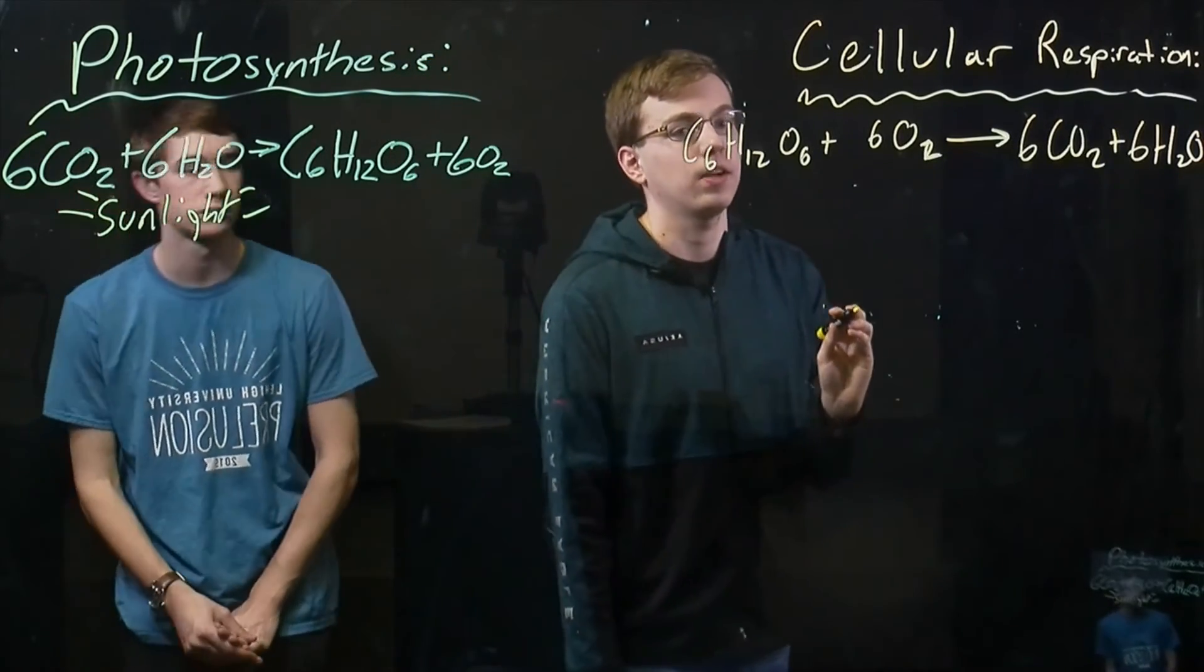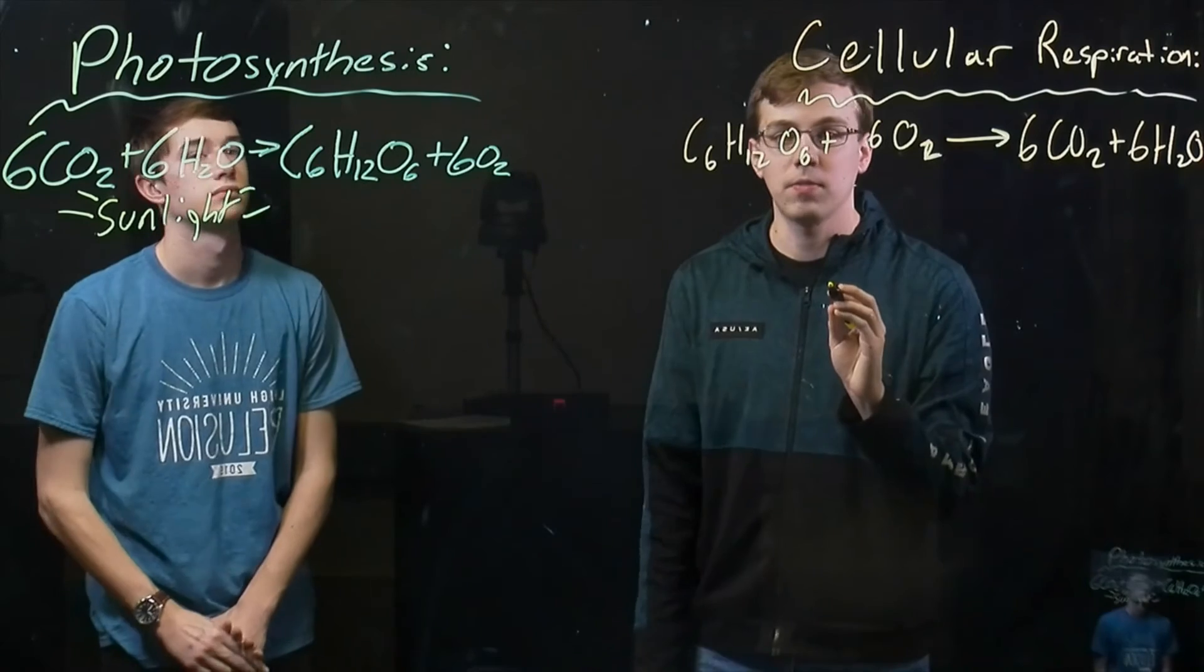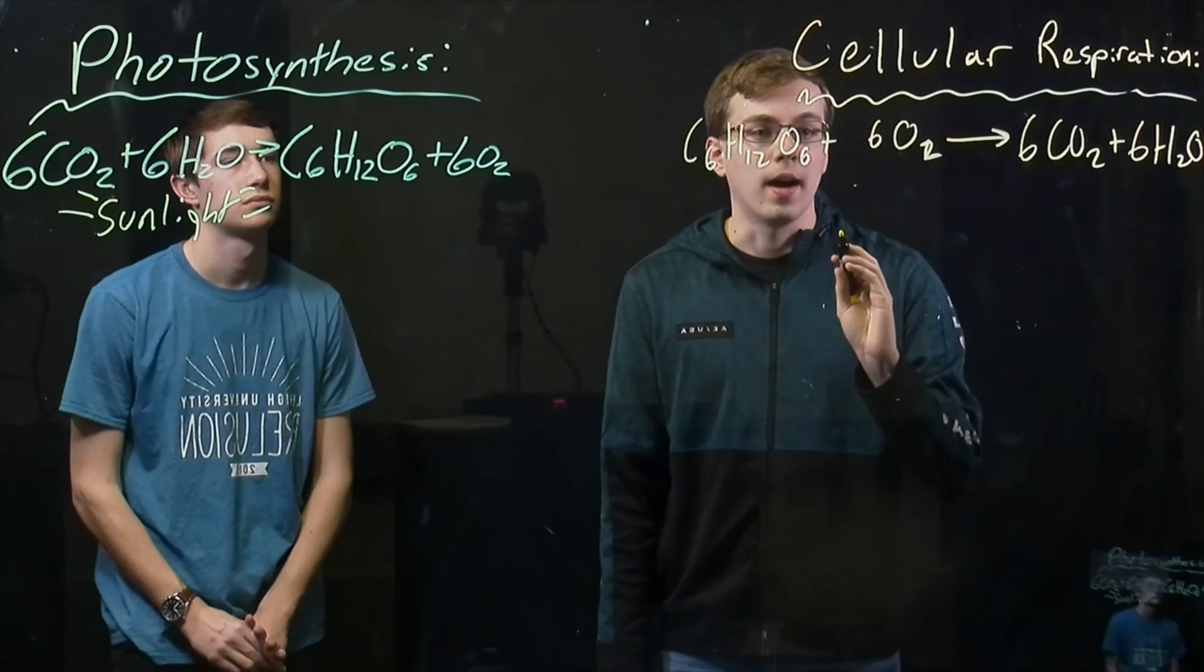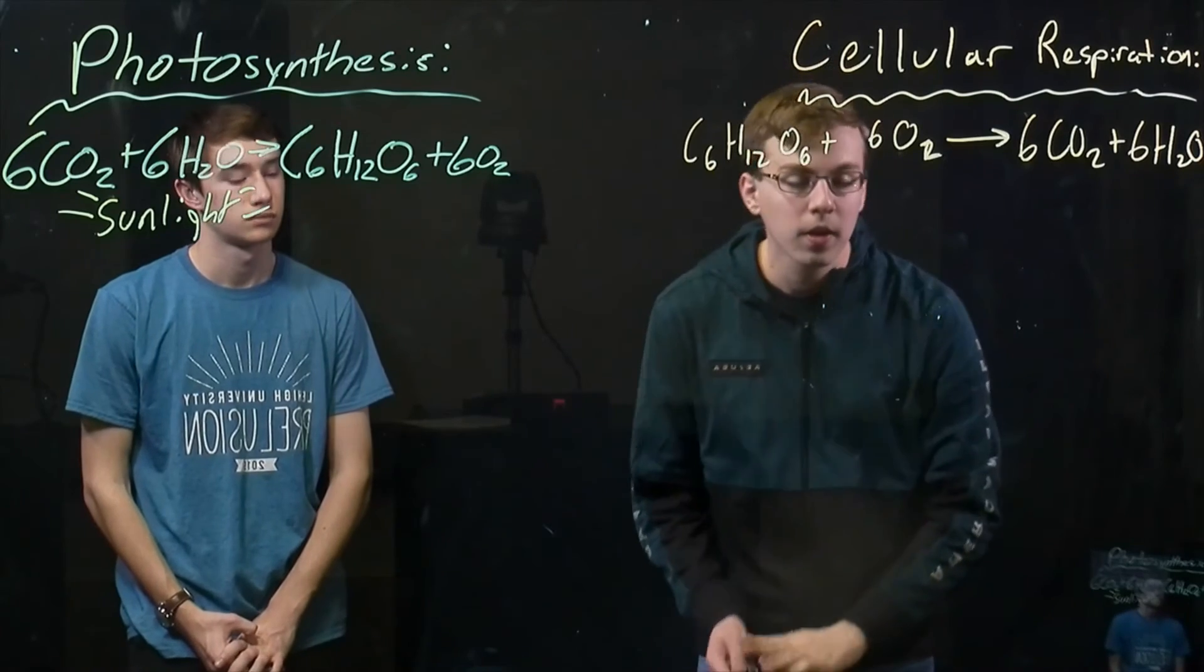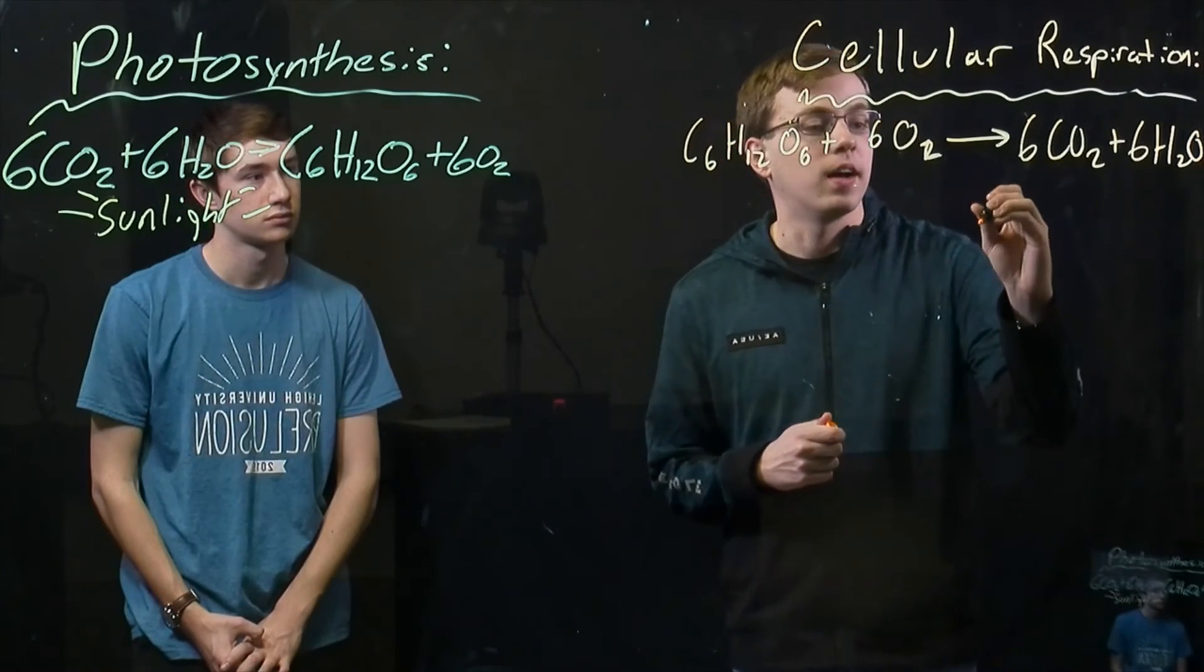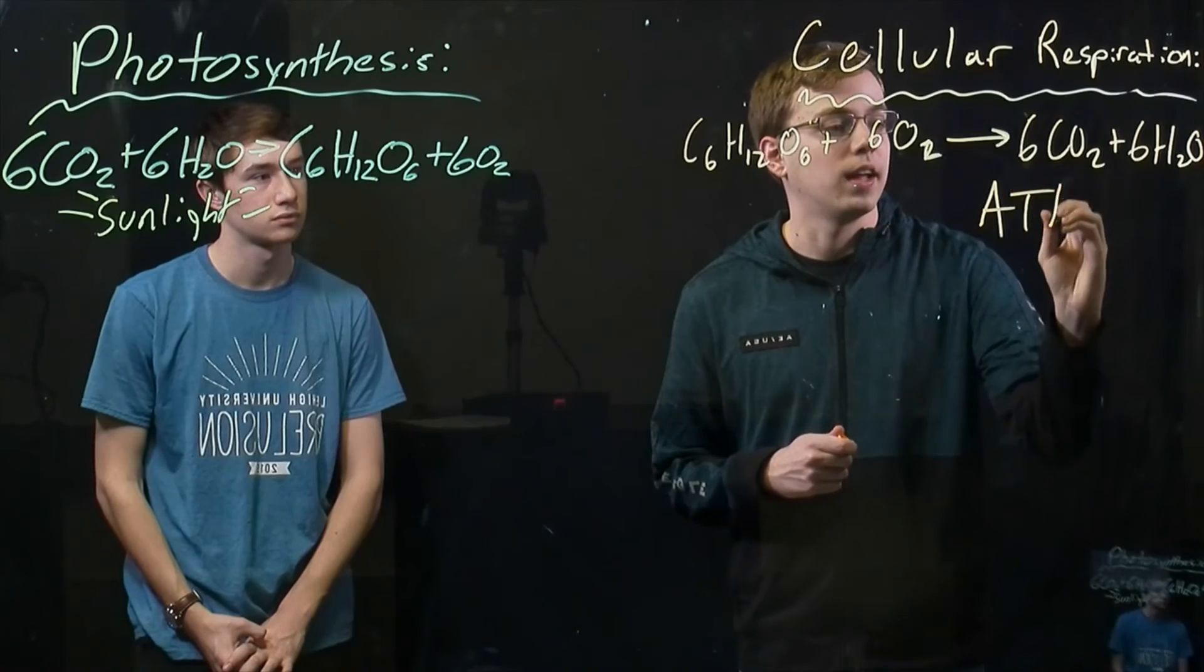And then, as you can see in cellular respiration, the glucose that is made in photosynthesis is oxidized with the oxygen to make carbon dioxide and H2O, which results in the formation of cellular energy and ATP.